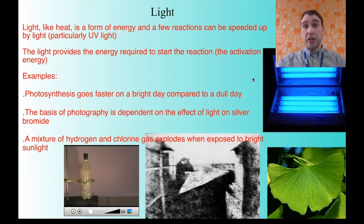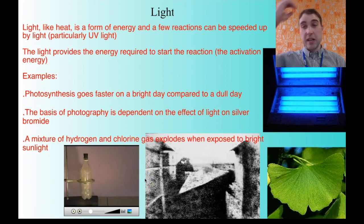Light can also provide the energy required for a reaction to start off and to increase the reaction rate. Light is a type of energy. If you provide light, particularly high energy light, like UV light to a reaction, you can speed it up. And there's specific reactions that this works for. Photosynthesis, that's where plants use light energy to turn carbon dioxide and water into sugar. That goes faster on a bright day compared to a dull day. There's more light to increase the reaction rate. Photography in the old days, before digital cameras at least, was based on exposing light to film and also photographic paper. That was down to a reaction that included silver bromide. When the light hit the paper or the film, that changed the structure of the silver bromide and we had a reaction happening. This is the first photograph ever taken down here.